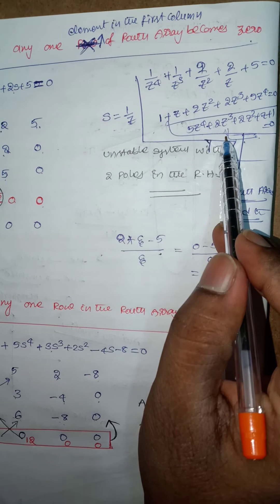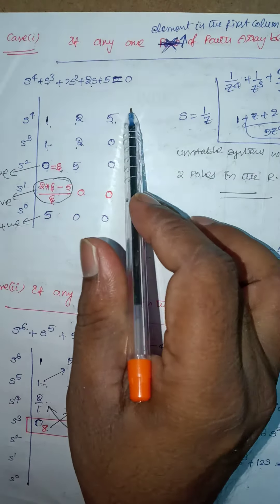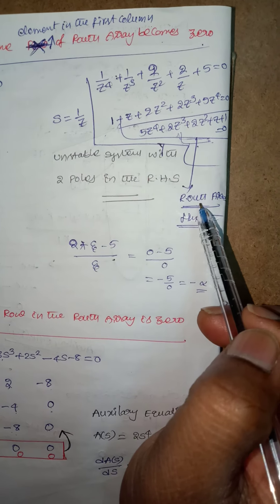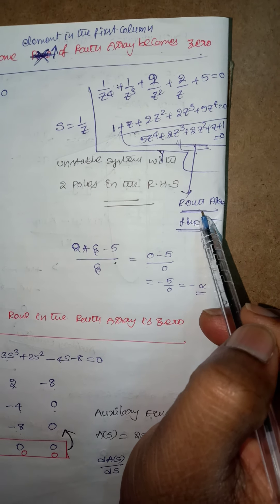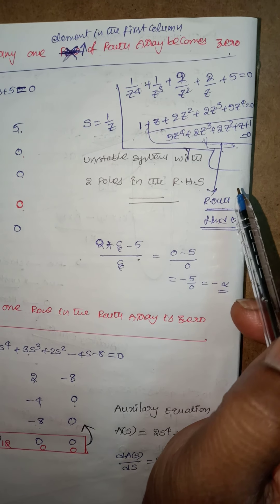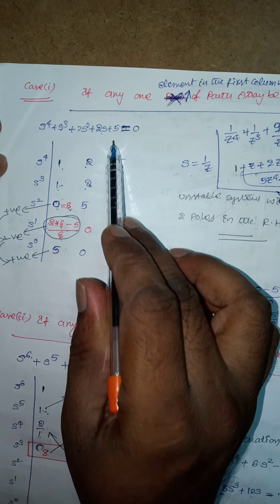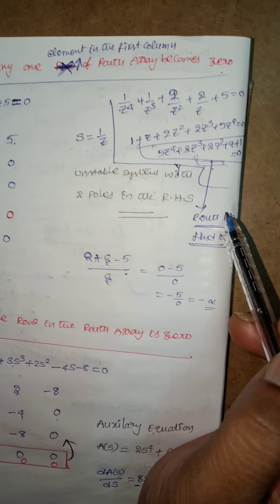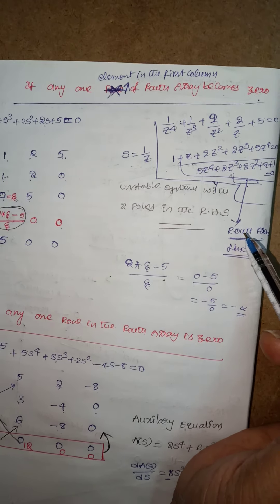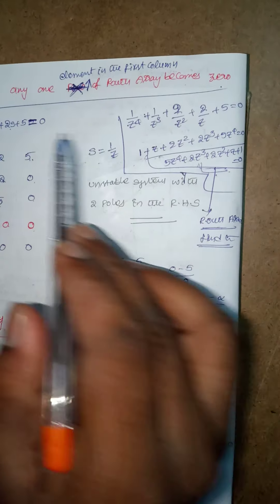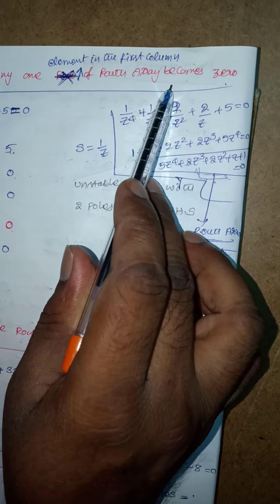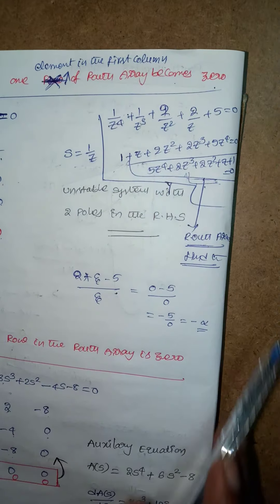For this new characteristic equation, you form the Routh array and find the stability. If all elements in the first column of the Routh array are positive, the system is stable. If any element in the first column is negative, the system is unstable. This applies whenever any one element in the first column of the Routh array becomes 0.